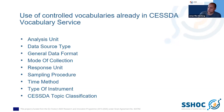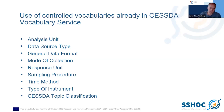What controlled vocabularies already in the SESTA vocabulary service do we use at SND in the DORIS system? We have: analysis unit, data source type, general data format, mode of collection, response units, sampling procedure, time method, type of instrument, and SESTA topic classification. These are the controlled vocabularies we make use of, and we don't have any local changes to the content at SND — we use them straight out of the book.